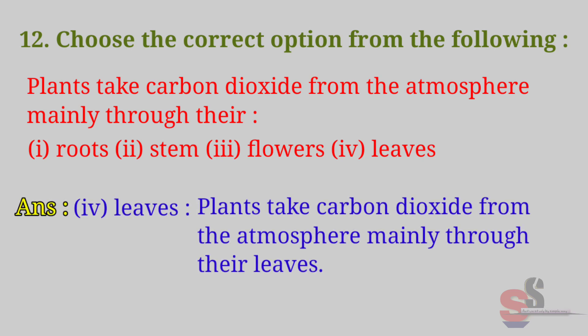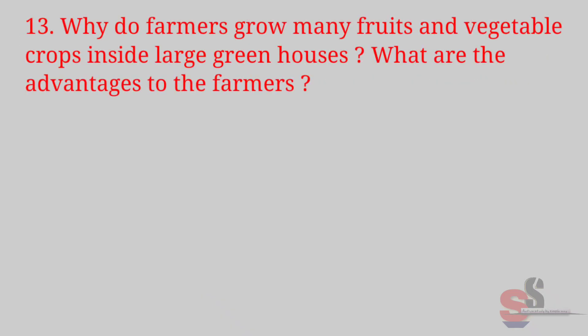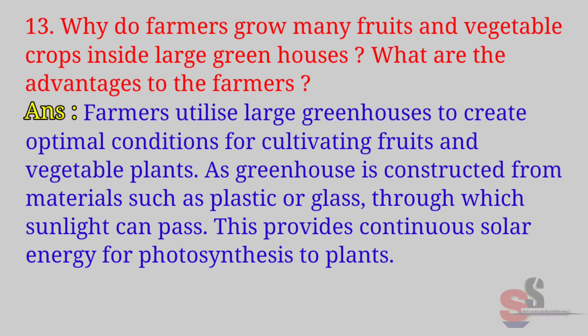Question 13: Why do farmers grow many fruits and vegetable crops inside large greenhouses? What are the advantages to the farmers? Answer: Farmers utilize large greenhouses to create optimal conditions for cultivating fruits and vegetable plants. A greenhouse is constructed from materials such as plastic or glass through which sunlight can pass. This provides continuous solar energy for photosynthesis to plants.